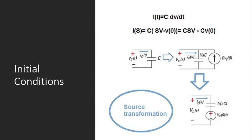Resistors do not store energy, so when you turn on the power supply, the current passes through them. When you turn off, the current stops passing through them. But capacitors and inductors are not like this.